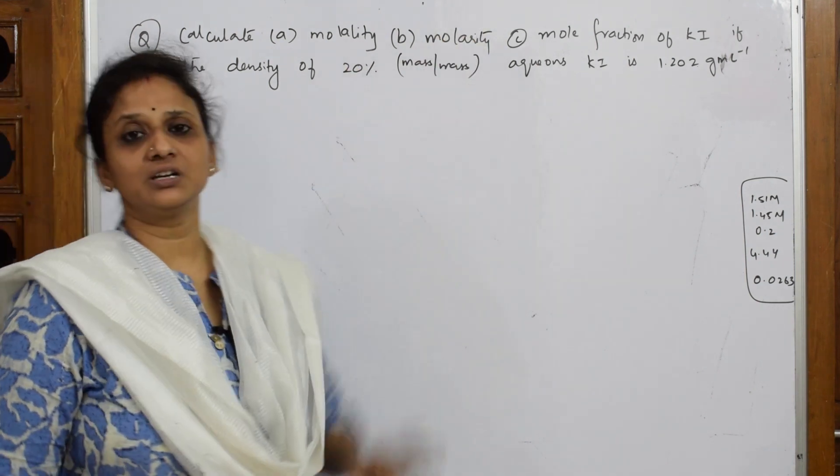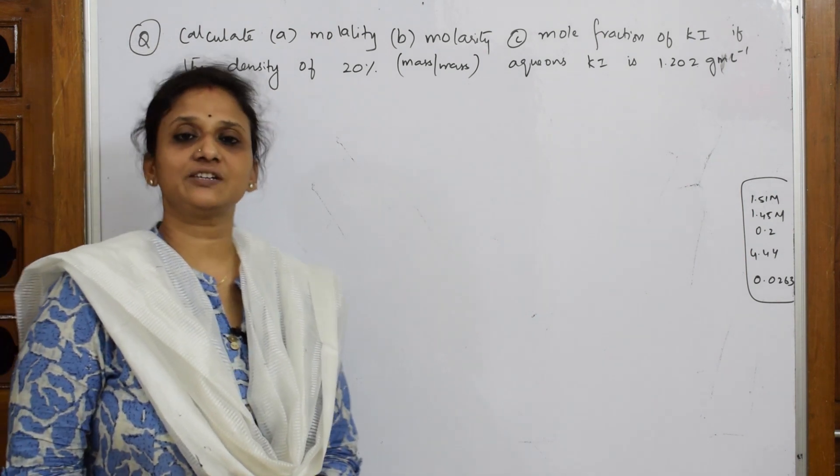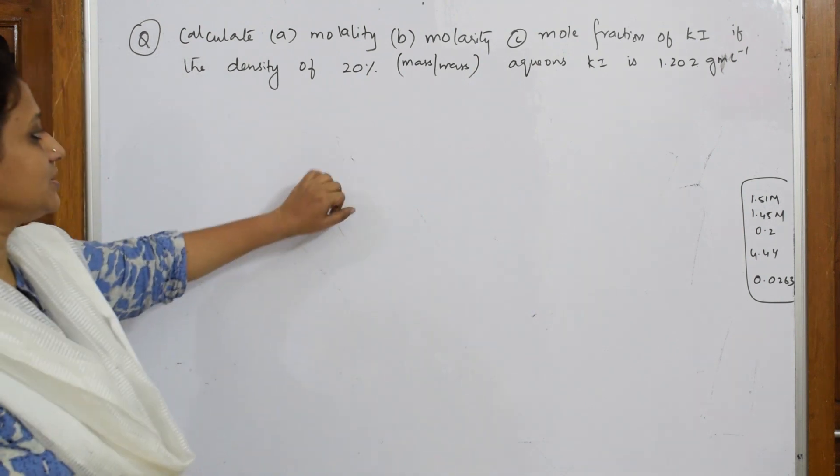One mark each for all three. So, three plus two, five marks. That is your three marks numerical and two marks for definitions or differences. Let us start solving this numerical.